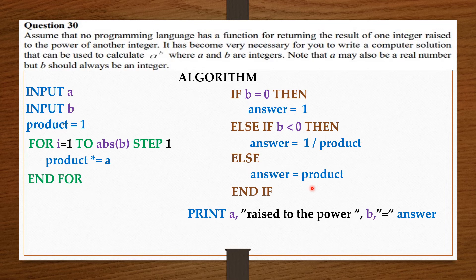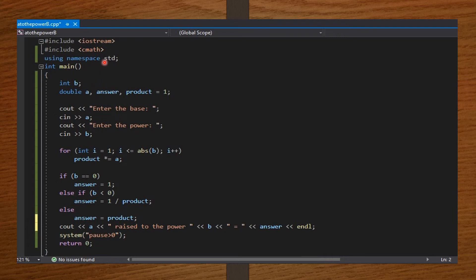Now, let's convert our program or algorithm to code in C++. So, before the int main function, I declared, I included the cmath library. Then, I take answer and product from the user as a double.